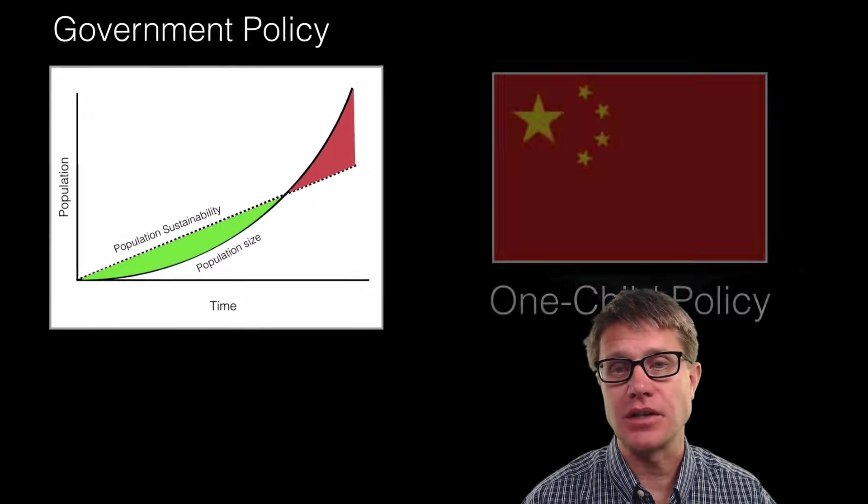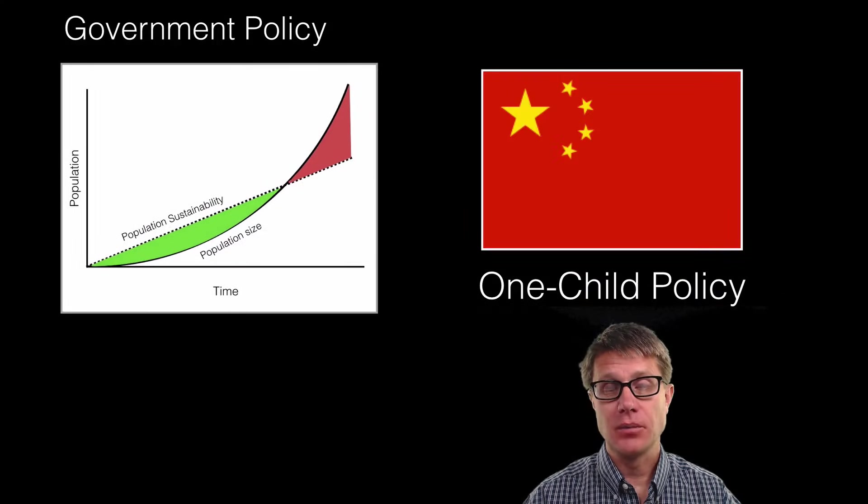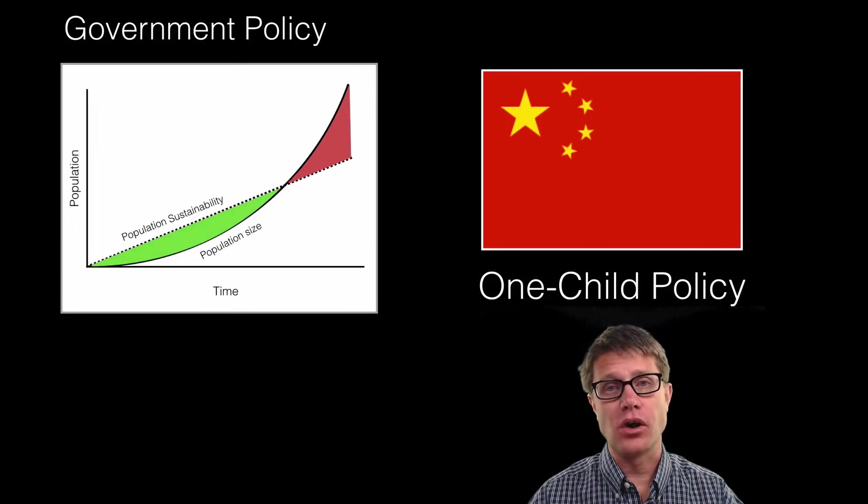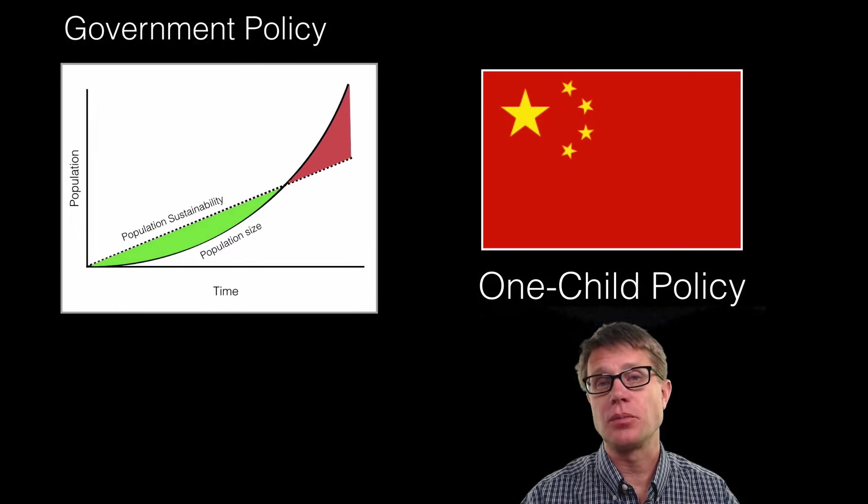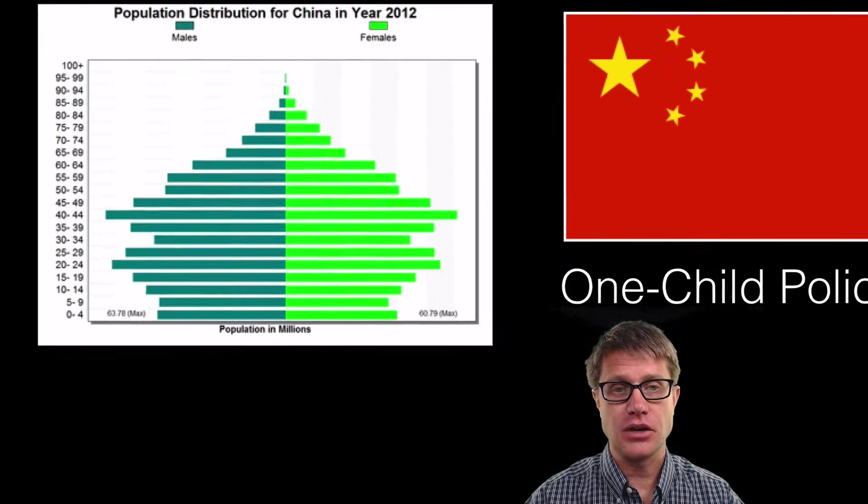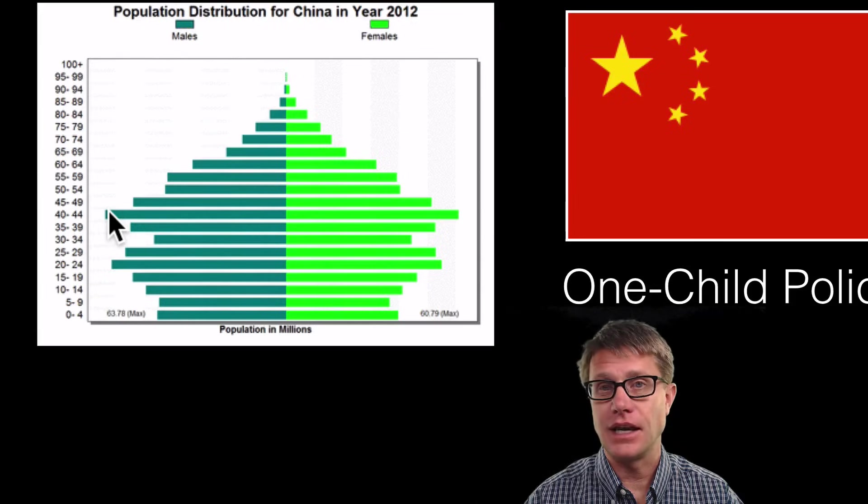Well one of the most famous examples is China's one child policy. What they did is made a strict policy where you could only have one child. You could have more but there are going to be economic constraints put on you. Not rewards. You will not get rewards. And so if we look at how this played out in the age structure diagram it rolled out in the 1980s.